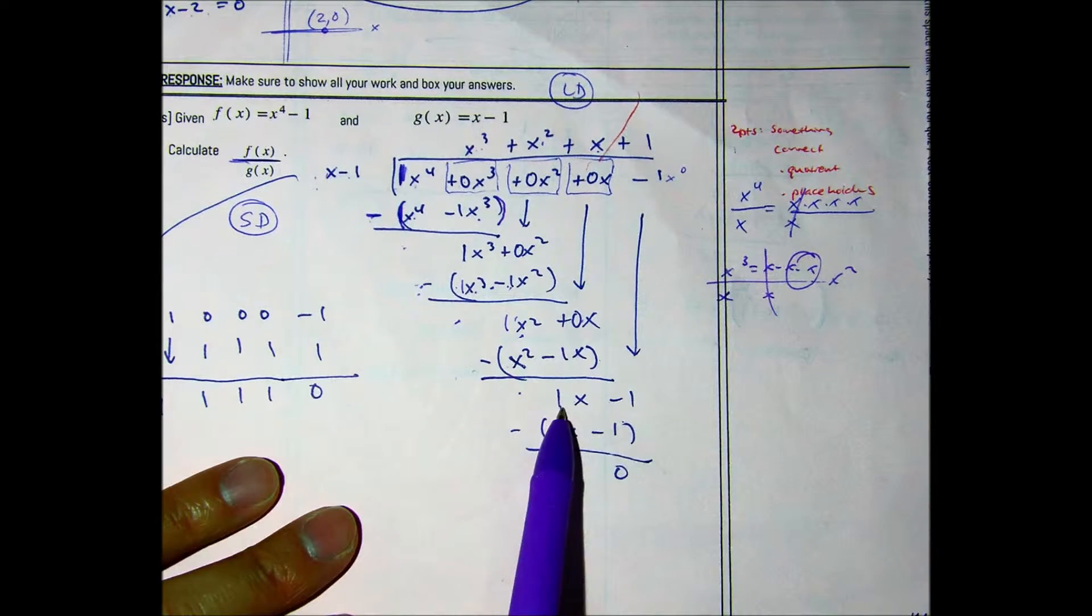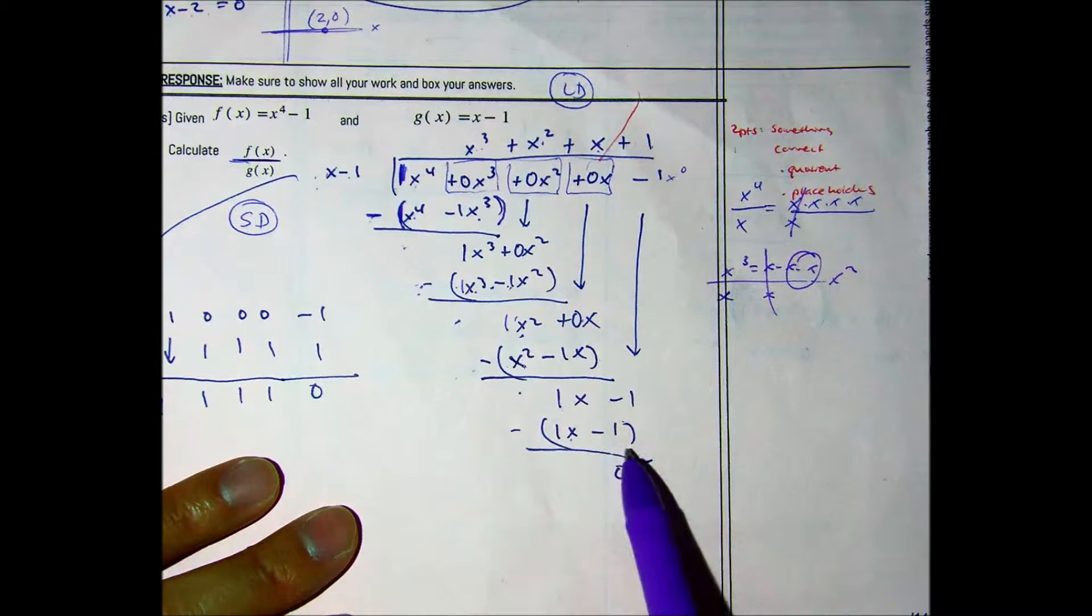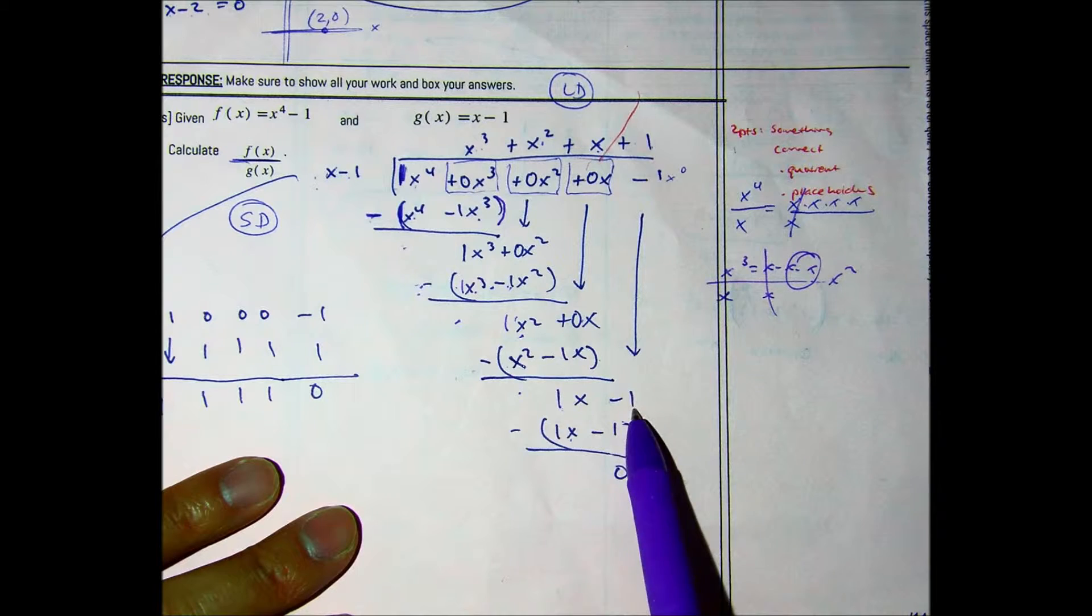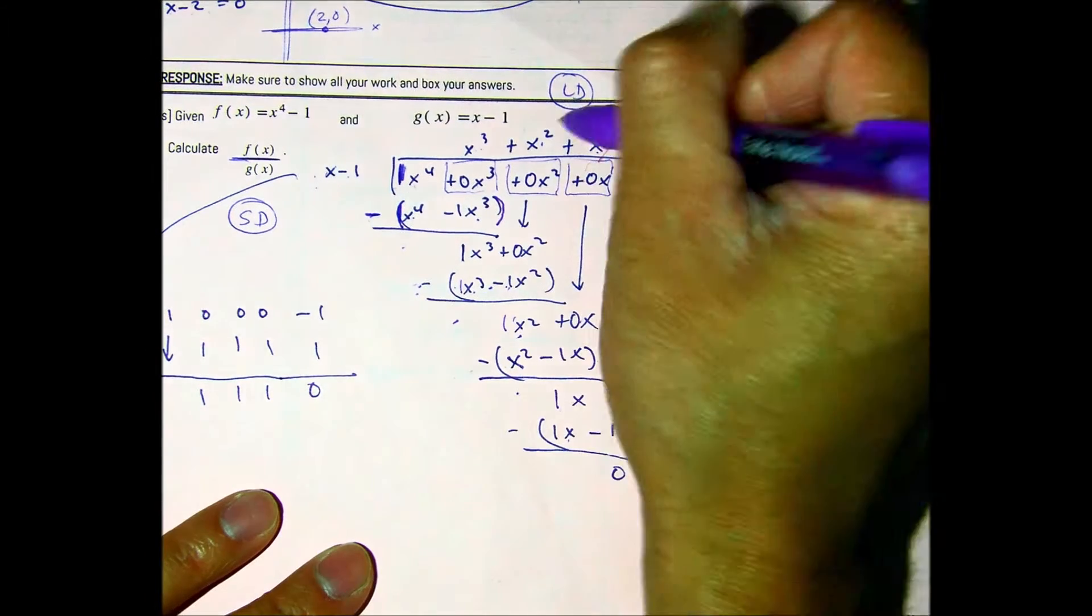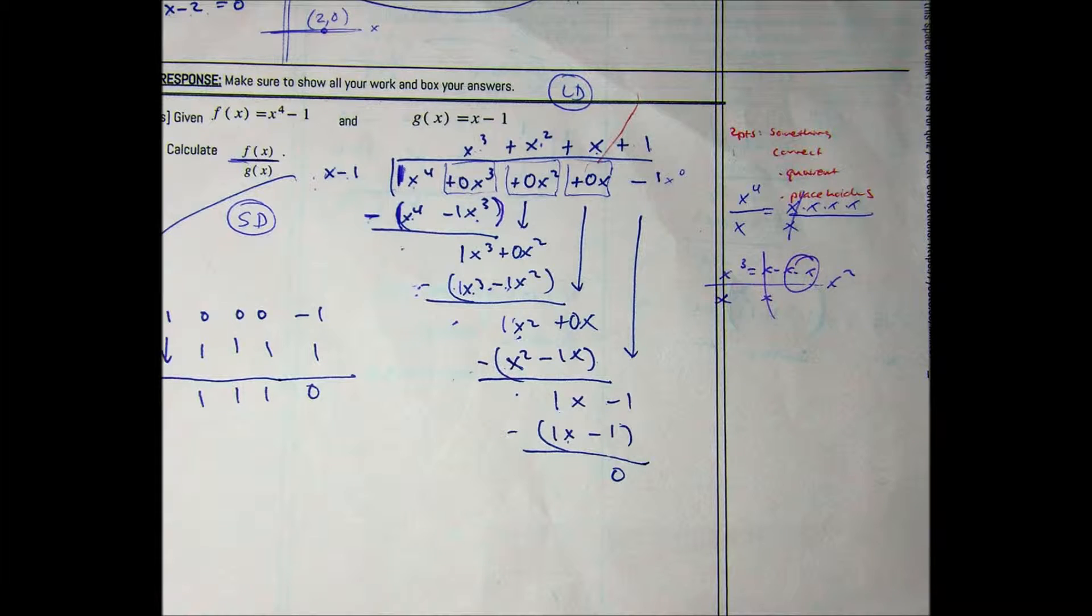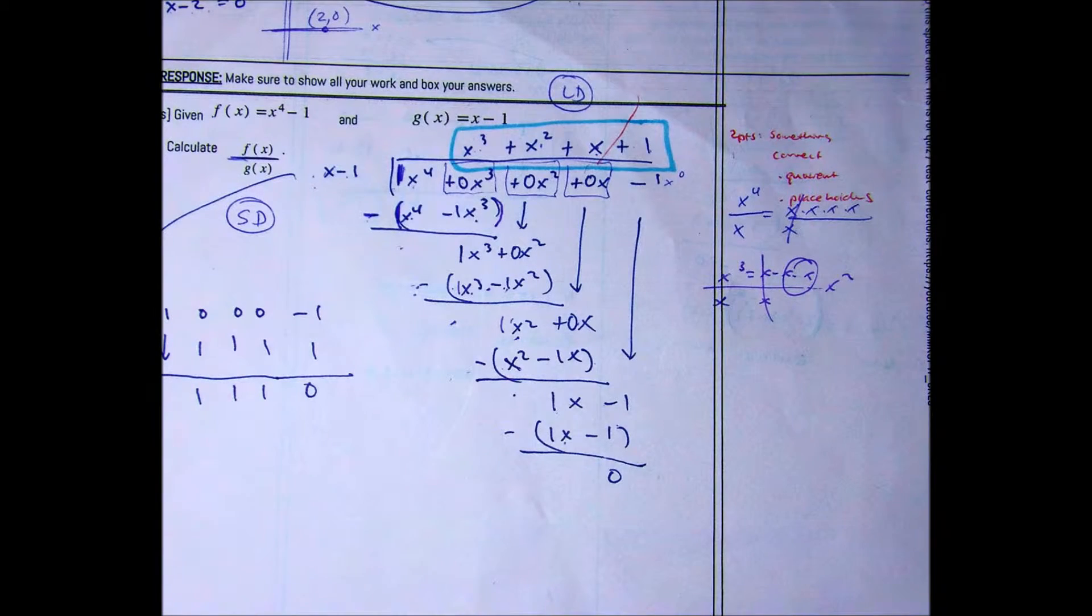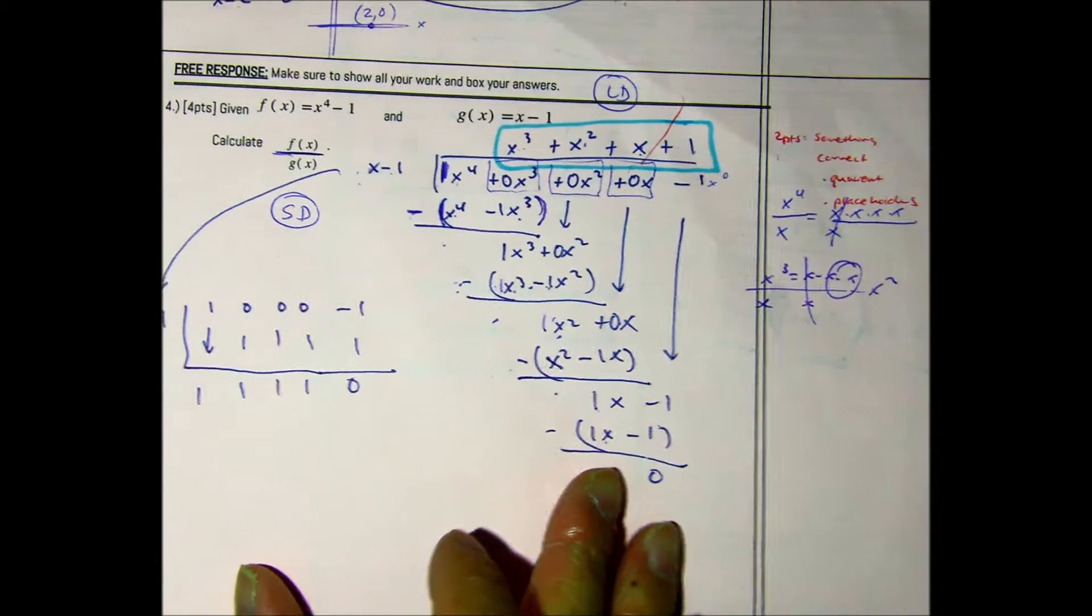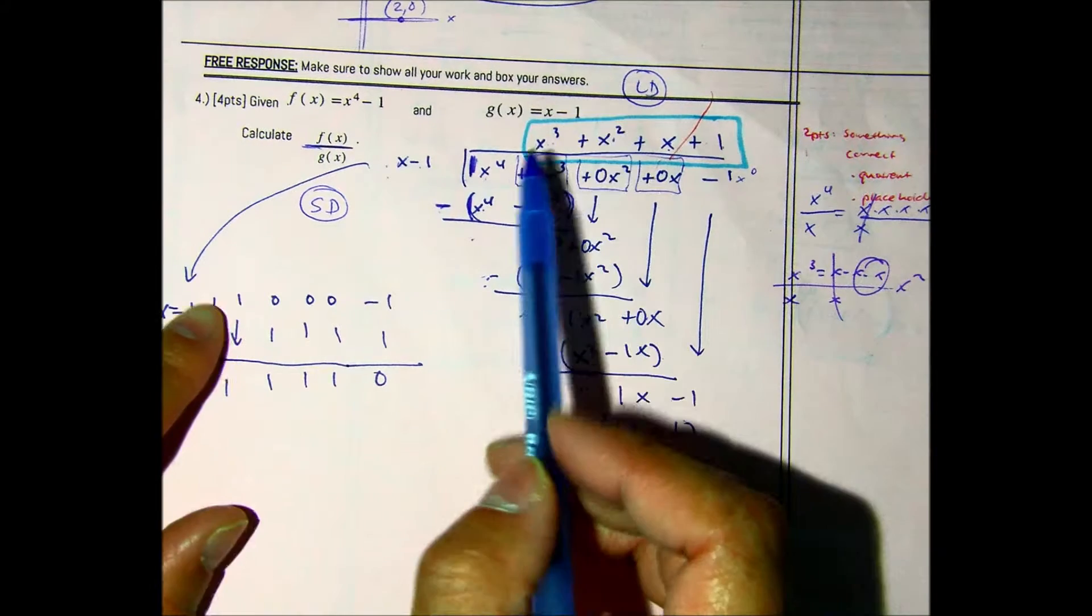x goes into x one time. 1 times x is x. And x times negative 1 is negative 1. And then you subtract. 1 minus 1 is 0. Negative 1 minus negative 1 is also 0. So, the answer to this problem is the quotient, which I will box here. Notice how this problem doesn't tell us to write the product or anything like that.